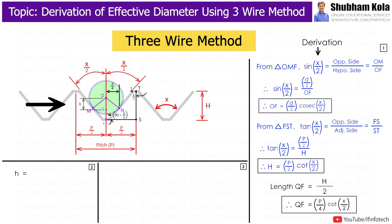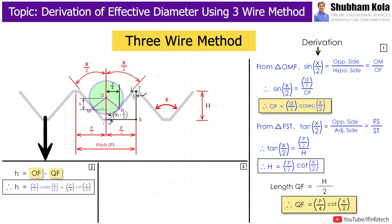In the figure, the length small h is the distance between the center of the wire and the effective diameter line, which is length OQ. We write small h, i.e. length OQ, as OF minus QF. Since we already have the values of OF and QF, substituting these values gives us the formula for small h.